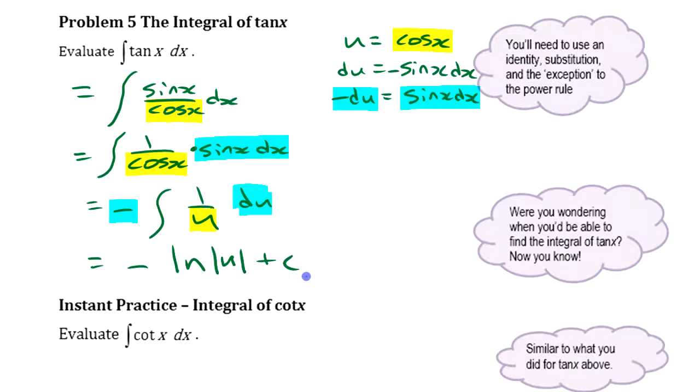So ln absolute value, for reasons we've discussed, plus a constant. That's negative ln absolute value of u. We need to put u back in for what it is: cos x. So negative ln absolute value of cos x plus c.